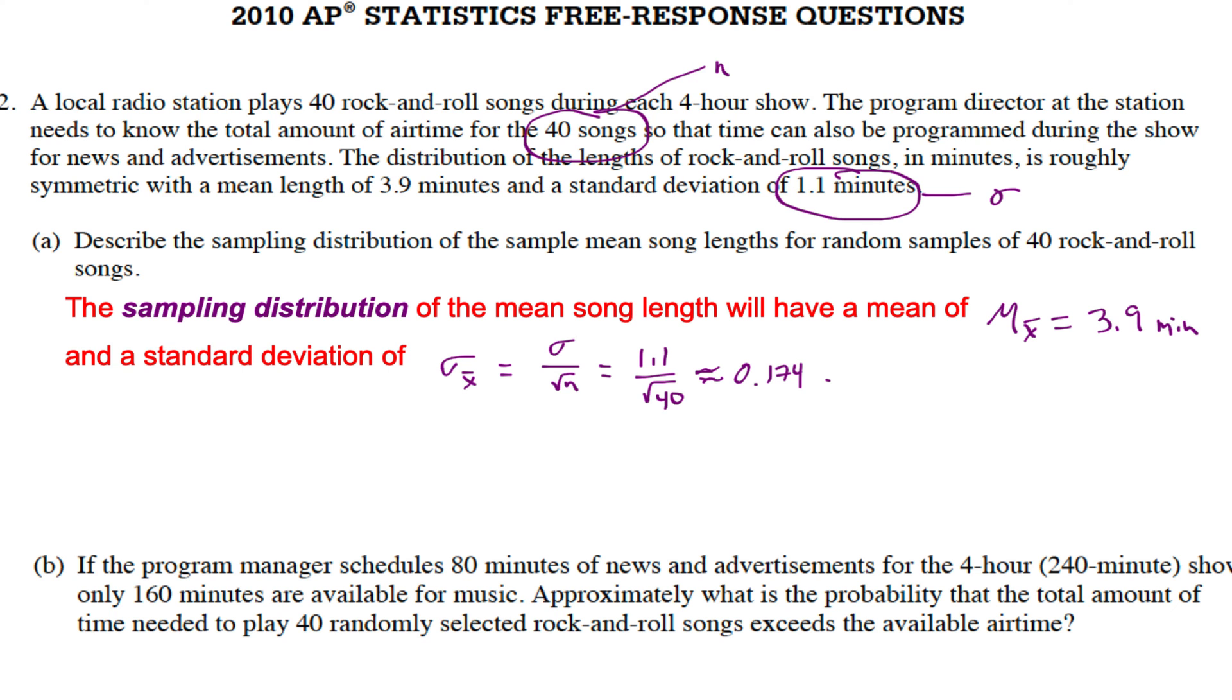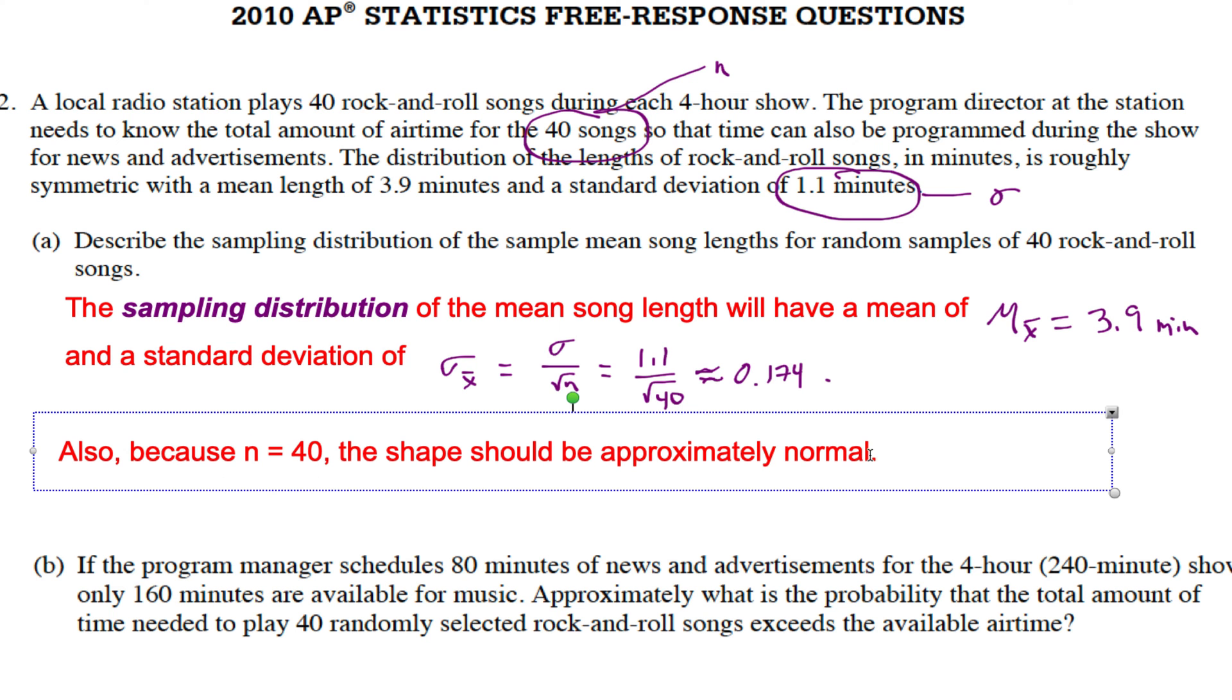We have described the mean and the spread. The next thing we can do is describe the shape of it. Because n equals 40, the shape should be approximately normal according to the Central Limit Theorem. That's gonna make lots of people happy if I use the Central Limit Theorem as my justification for the shape. Whenever you're taking a sampling distribution of means and n is approaching 30 or 40, the shape should be approximately normal. Done, that was part a. Not too difficult. You just have to know your rules for sampling distribution.